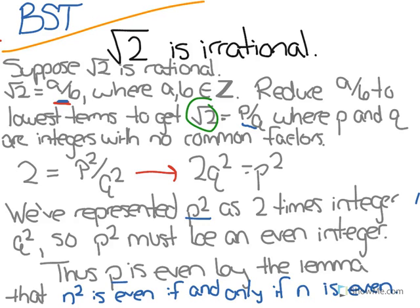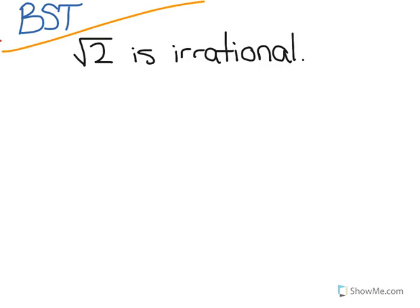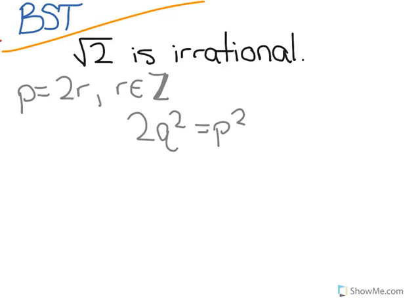So let's clear the screen to continue this proof. If p is an even integer, then it follows that p equals 2 times an integer r. Remember that the equation we had before was 2 q squared equals p squared. So, we can then substitute what we now know about p and change this to 2 q squared equals 2 r squared, or 2 q squared equals 4 r squared, or q squared equals 2 r squared.